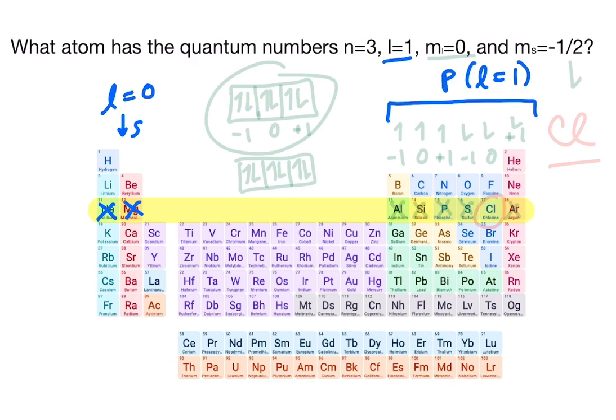Next, we can do m sub l equals 0. Each column of the periodic table will help us determine this quantum number. So as we remember, this is what the p subshell looks like, and we're going to fill each orbital separately and then come back and pair up the electrons.